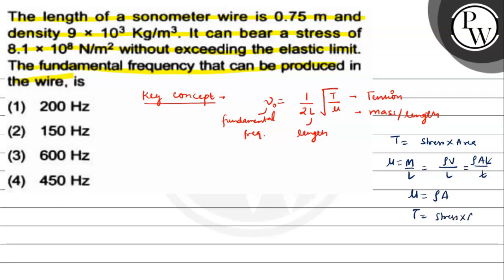You know we have a value of T that we have found over here is stress into area. Now we'll put all the values here. Let's see what happens. So we are getting nu naught is equals to 1 by 2 L square root of stress into area divided by rho a. So rho a and a cancel. So what do you get? You get stress upon rho.